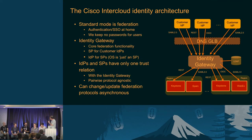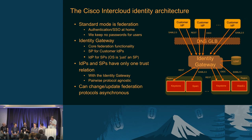Nova would talk to Cinder saying it needs a volume, and then talk to a public Barbican saying it needs a key that's federated somewhere. The two Barbicans would talk to each other, the public Barbican would get that key and hand it over to Cinder, and magic would happen. The key, even though it's stored in your private Barbican, does exist in the cloud for some time, but it's not stored there. This would help with attacks at rest — your key is in the cloud only when it's being used, but when it's not being used, it's only inside your premises.